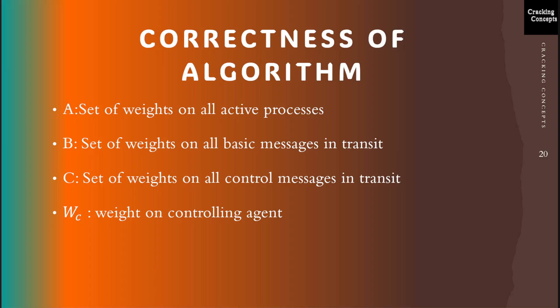Now we will look into the correctness of the algorithm. First, a few notations: A is the set of weights on all the active processes; B is the set of weights on all the basic messages in transit; C is the set of weights on all the control messages in transit; and WC is the weight on the controlling agent. Two invariants I1 and I2 will be used.